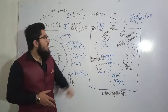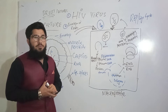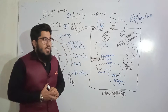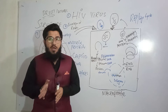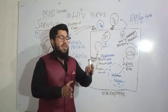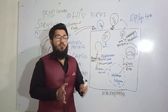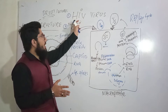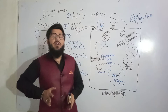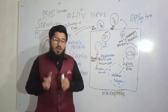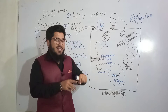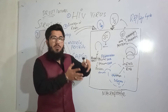Coming to the first point — HIV introduction. H stands for human, I stands for immunodeficiency, and V stands for virus. So, human immunodeficiency virus is such a virus that attacks a human and makes the immune system weak.